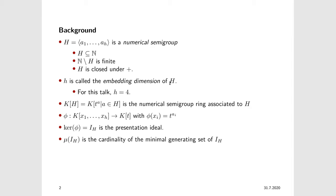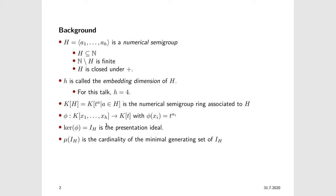Another very natural object we can associate with a semigroup is the numerical semigroup ring, given by K — the field — adjoined with T to the A, where A comes from the semigroup. We can also consider a natural homomorphism from the polynomial ring in h variables to K[T], where we send each Xi to T to the Ai. This is a graded homomorphism and a graded K-algebra map. The kernel of this map is called the presentation ideal or the defining ideal, denoted by I sub H, and the cardinality of the minimal generating set is denoted by mu of I sub H.